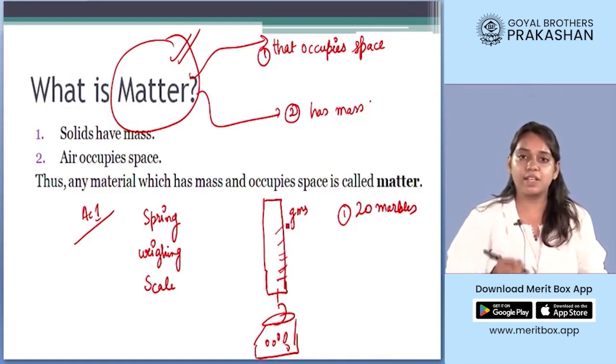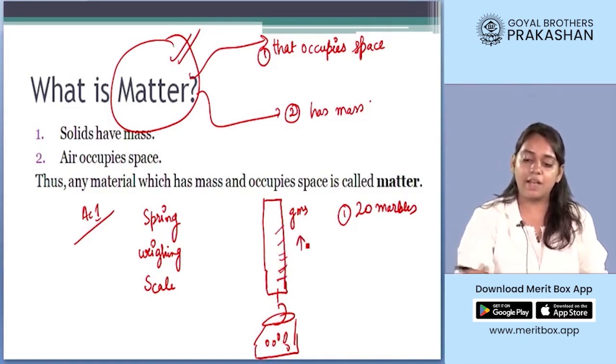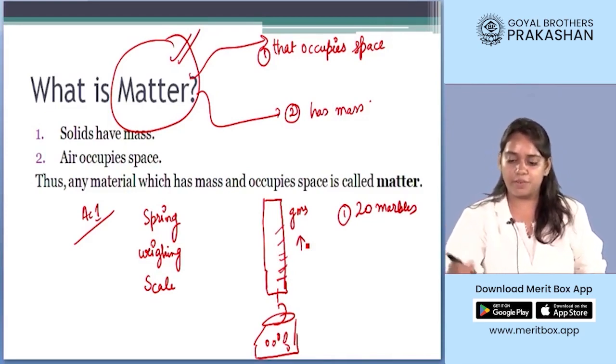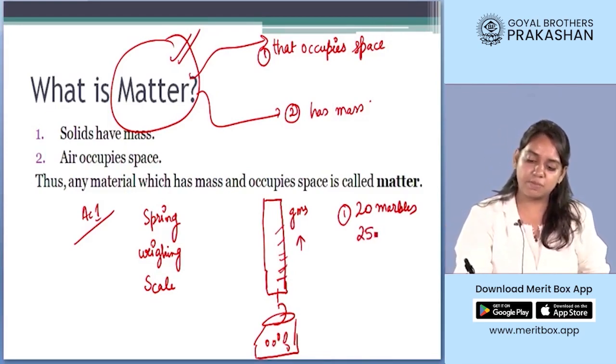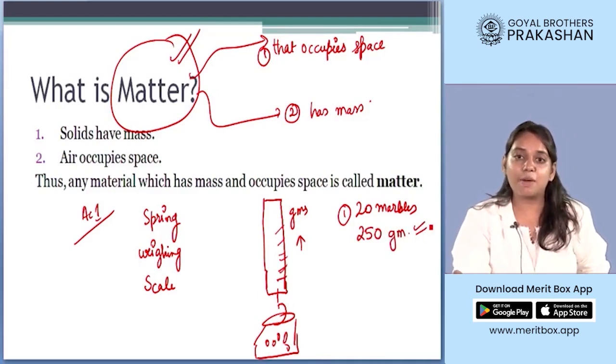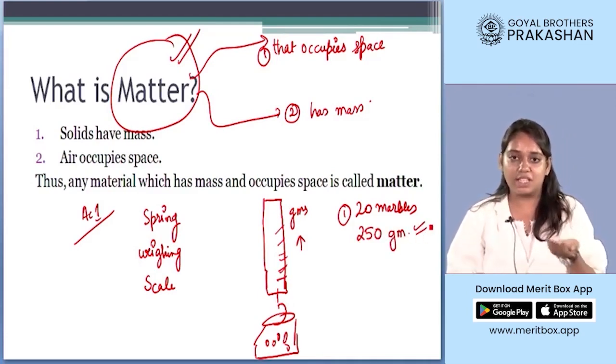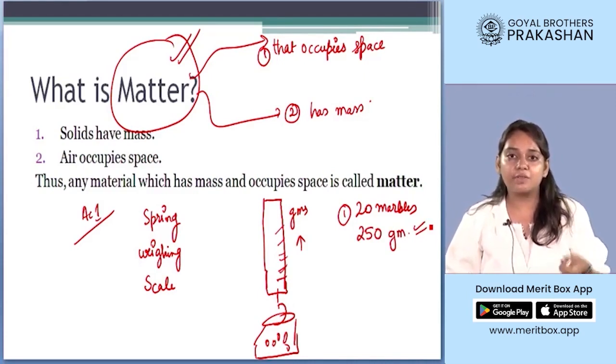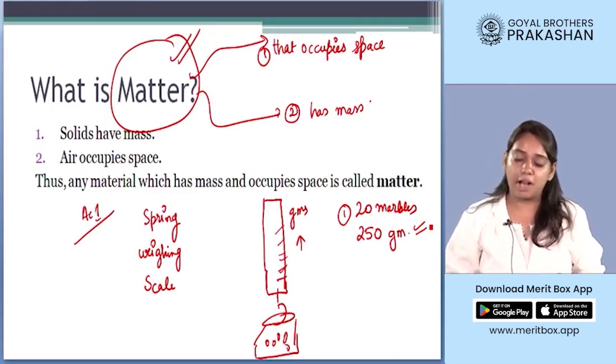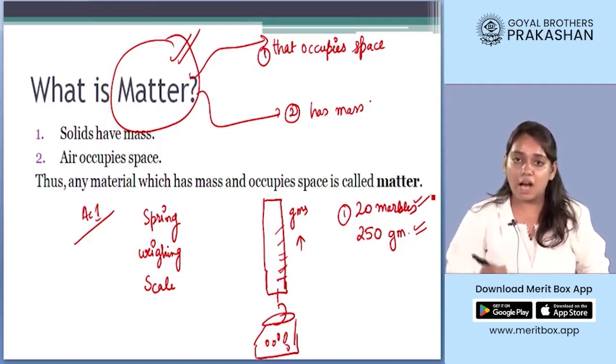Say we put 20 marbles into this jar and we will observe that the reading shown in the spring weighing scale has increased - it shows some weight, say its mass is 250 grams. So we can say that marbles occupy space as we can hold them in our hand and put them in the container, and they also have certain mass. So these marbles are matter.